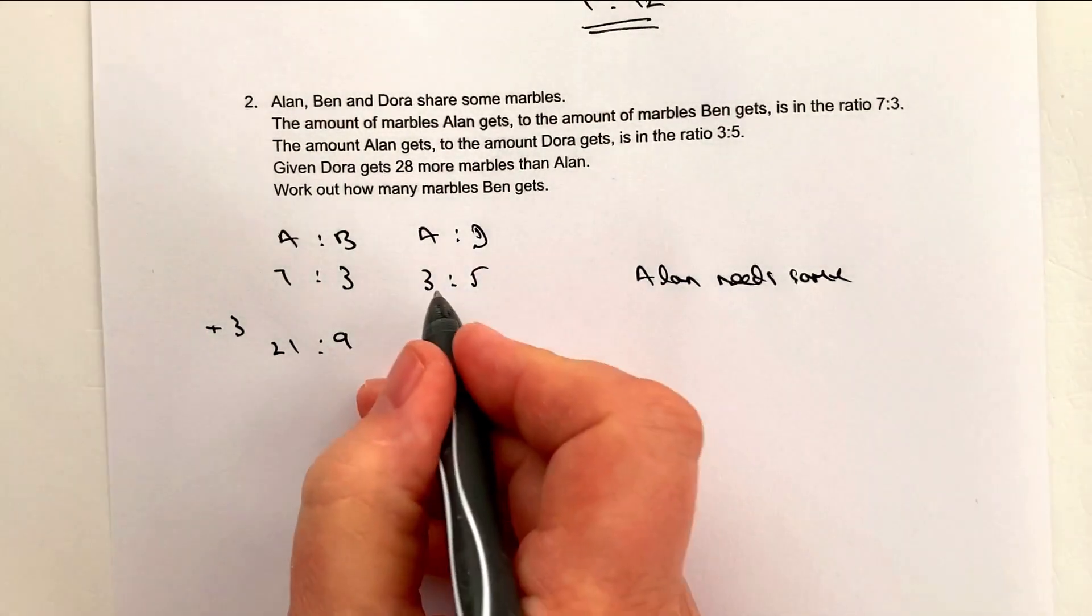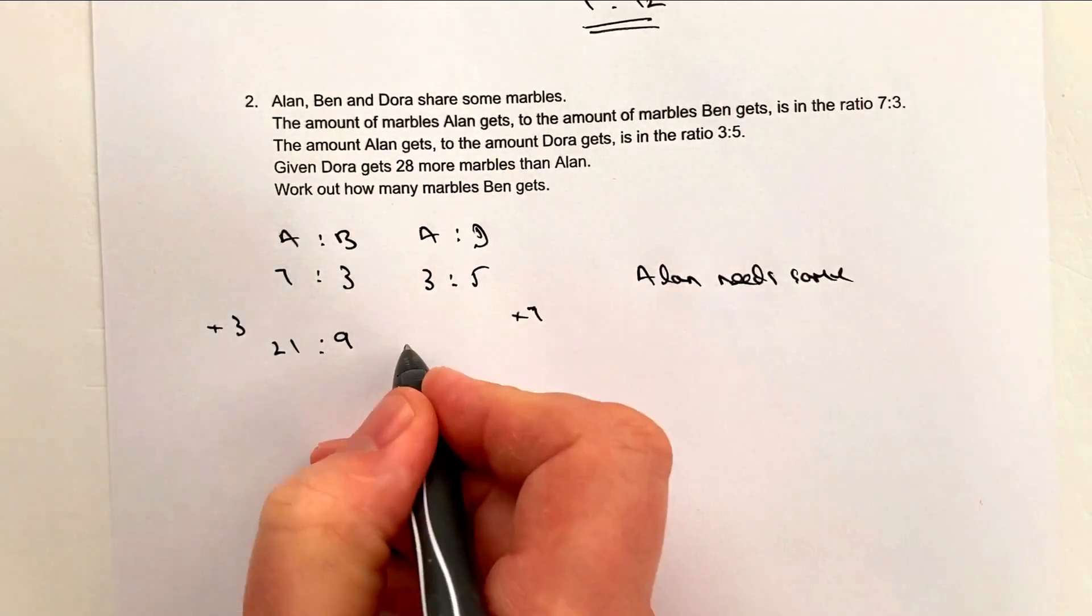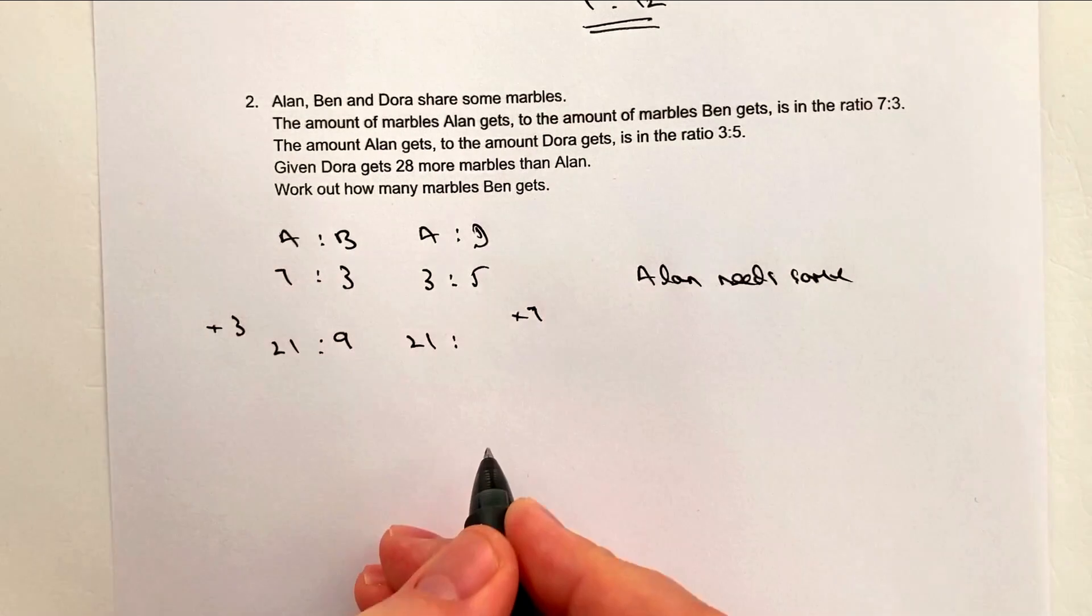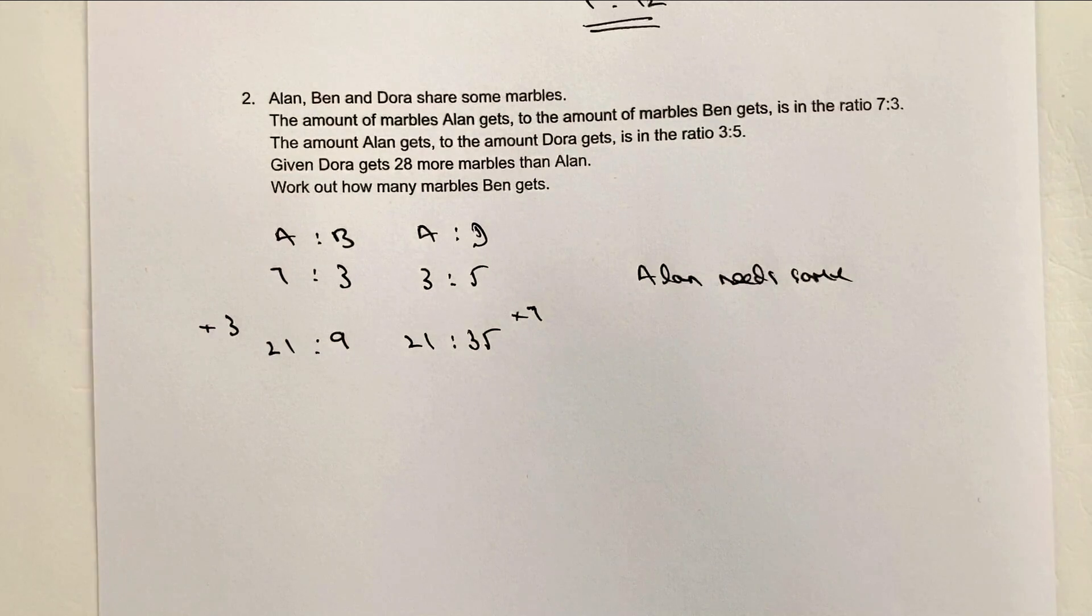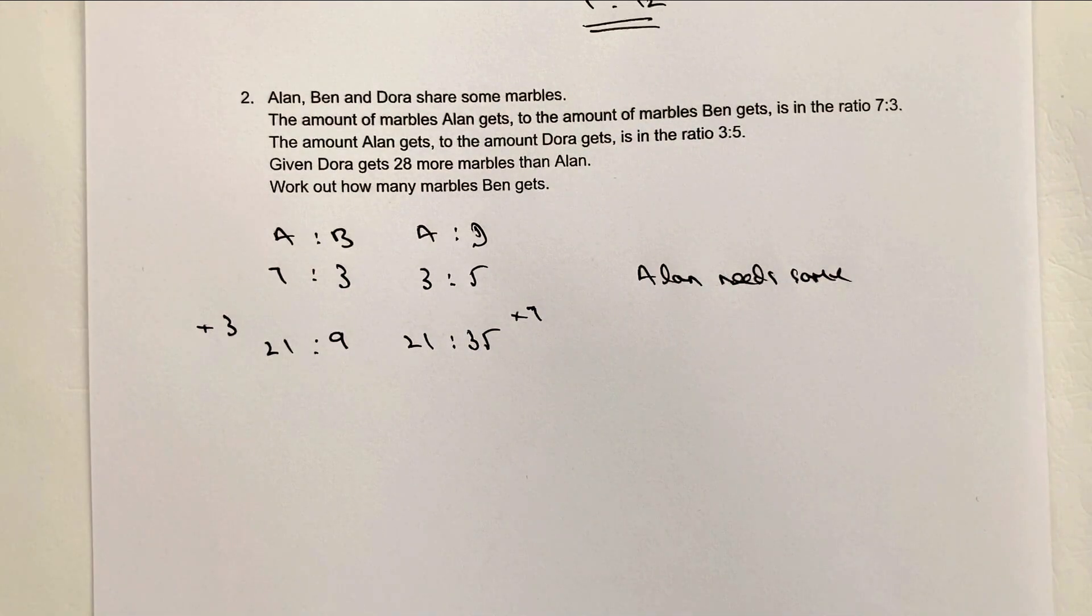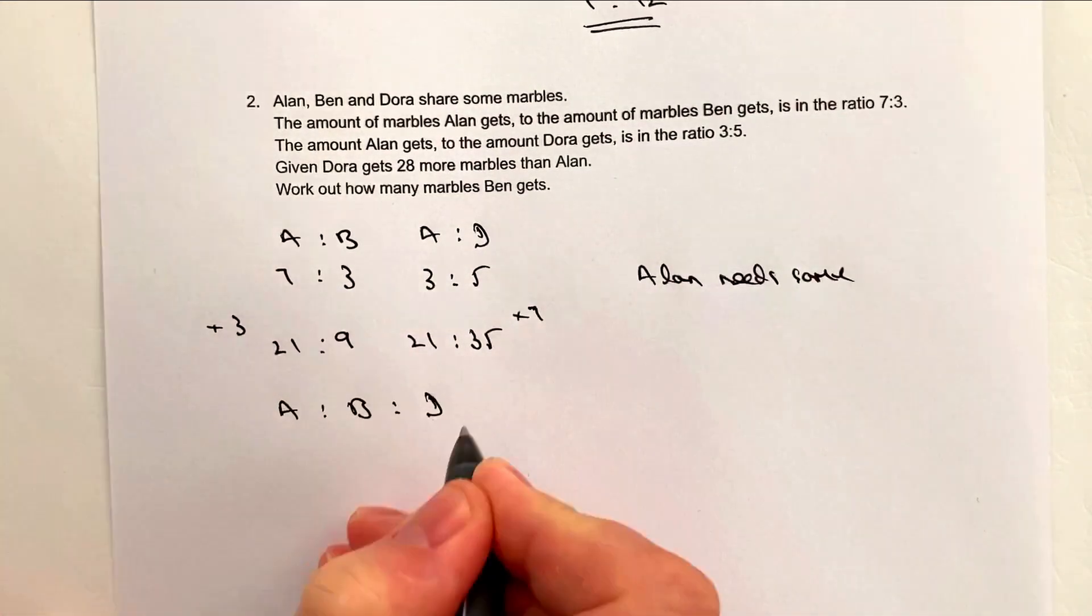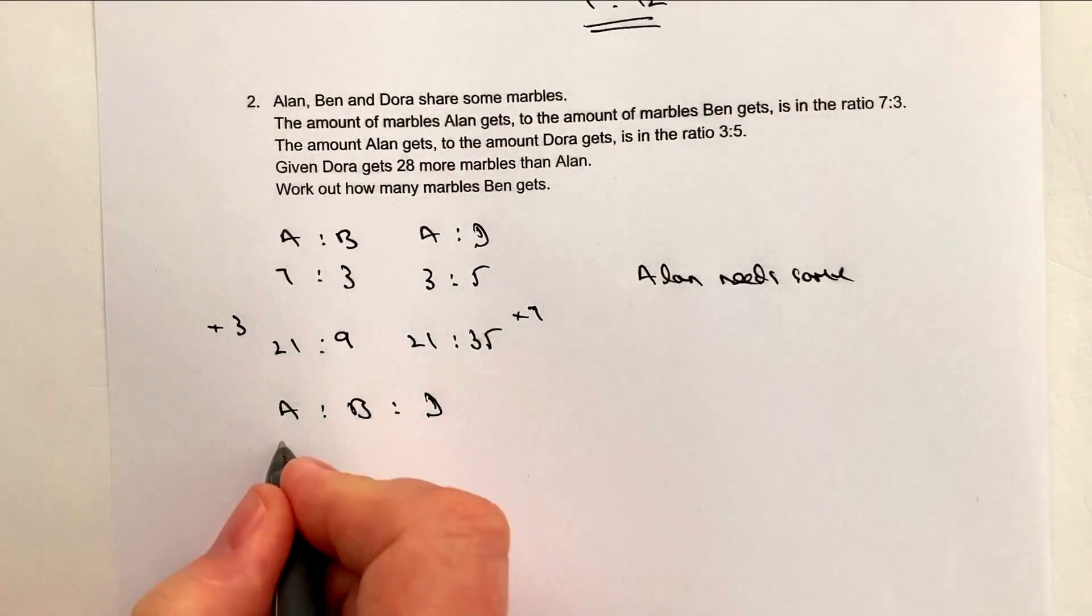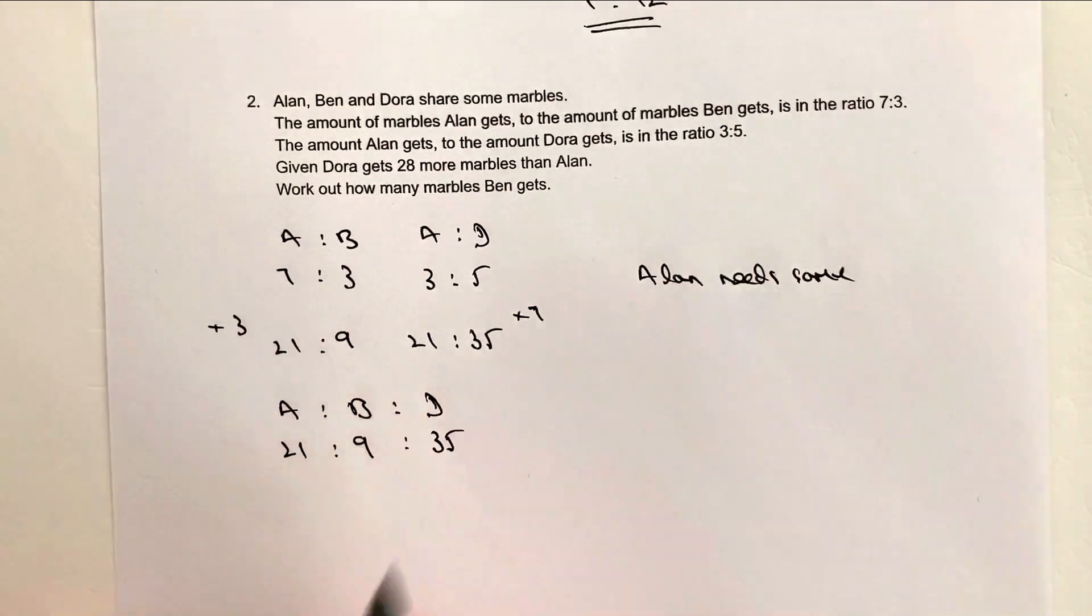I get 21 marbles for Alan and 9 marbles for Ben. If I multiply this ratio by 7, I'm going to get 21 marbles for Alan and I'm going to get 35 marbles for Dora. But we're now in a position where we can write Alan to Ben to Dora as 21 for Alan. Ben, we know, has 9 and Dora, we know, has 35.